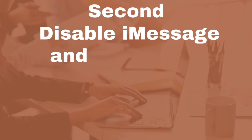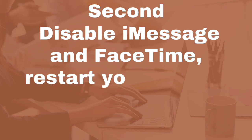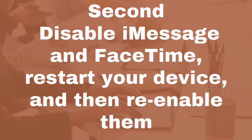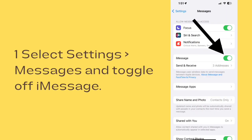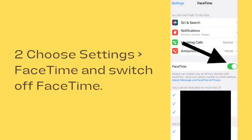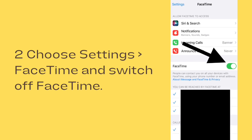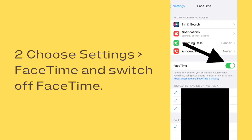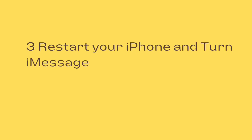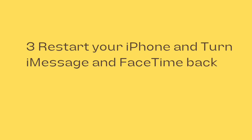Disable iMessage and FaceTime, restart your device, and then re-enable them. Go to Settings and Messages and toggle off iMessage. Then choose Settings and FaceTime and switch off FaceTime. Restart your iPhone, then turn iMessage and FaceTime back on.